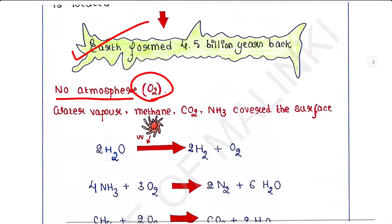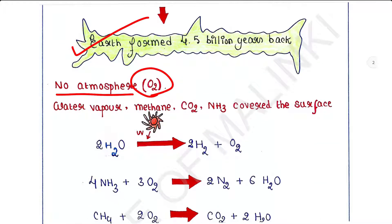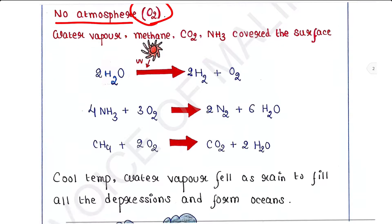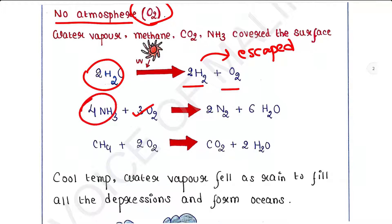Water vapor, methane, carbon dioxide, and ammonia covered the surface. The UV rays from the sun broke up water into hydrogen and oxygen. Hydrogen escaped. Oxygen combined with ammonia and methane to form water, CO2, and others.